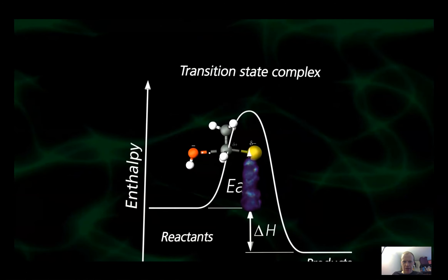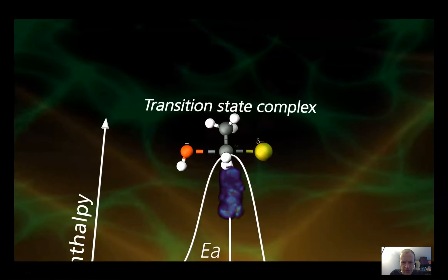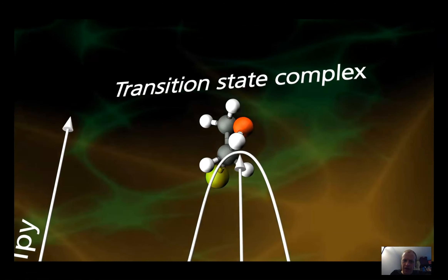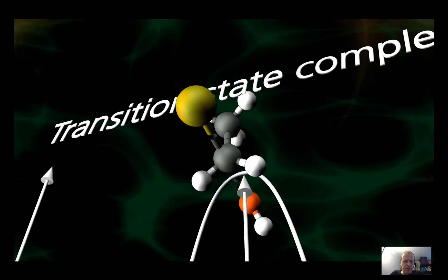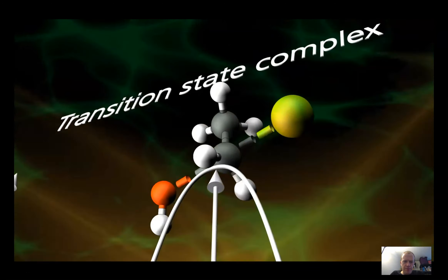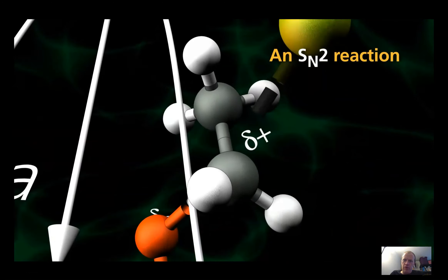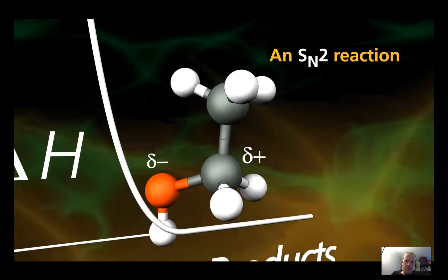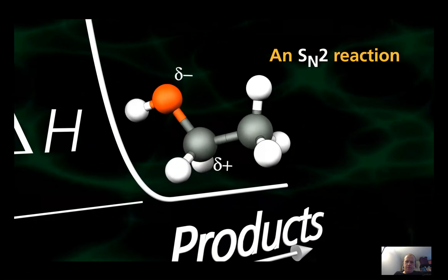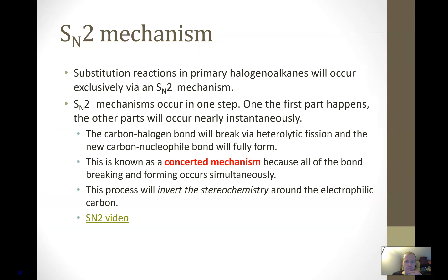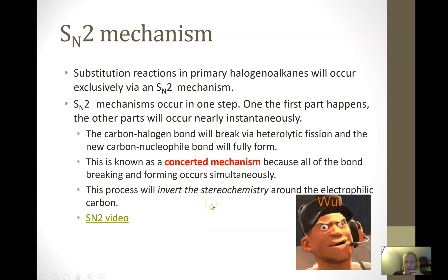Showing the animation again: note the flipping of the stereochemistry. The transition state is the highest activation energy point. Then the bond to bromine breaks. Hopefully that gives you a visual of how this reaction takes place.